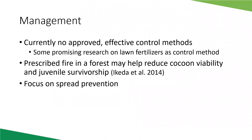There are currently no approved control methods to control jumping worms. There is some ongoing research on organic lawn fertilizers, a BT-type bacterium as an organic control similar to what people use for caterpillars, and different types of mulch that may deter them. But nothing is currently approved and recommended. In a natural setting, prescribed fire in forests has been shown to temporarily reduce cocoons and young worms, but overall we don't have good recommendations for how to get rid of them — and that's one of our biggest challenges.